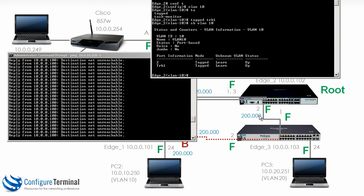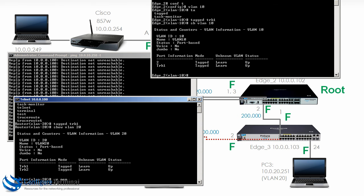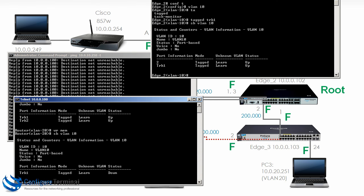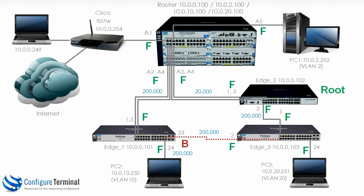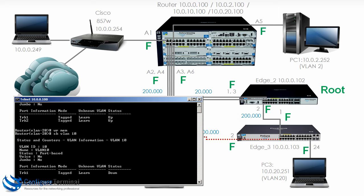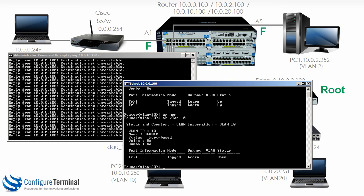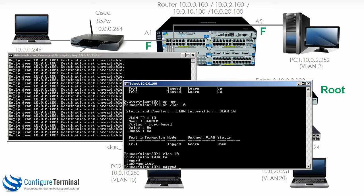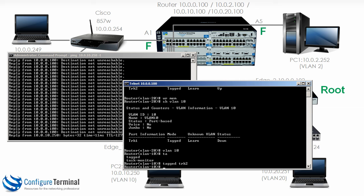What about on our router? On the router, show VLAN 10 — notice I did not allow VLAN 10 across this link. I didn't configure it on the router and I didn't configure it on edge 2. So on the router, go onto VLAN 10, tagged TRK 2. As soon as I did that, you will notice the pings start succeeding.